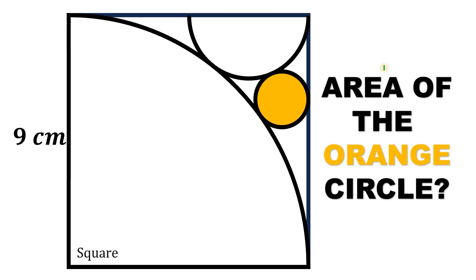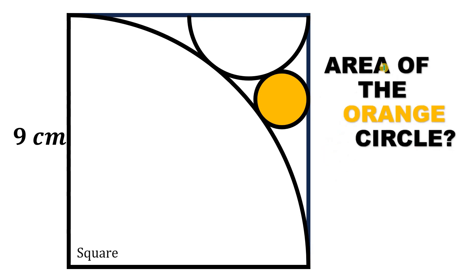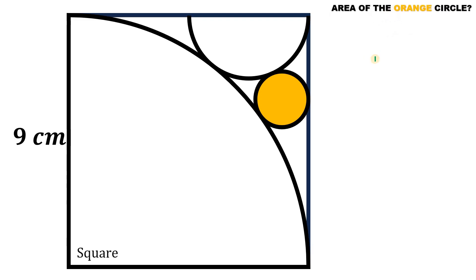Pause this video right now and see if you can answer this question, because I will show you the solution in 3, 2, 1. Now given this figure, the goal is to find the area of this orange circle. To answer this kind of question, let's focus on the important points: the center of this quarter circle, the center of the semicircle, and the center of the orange circle.